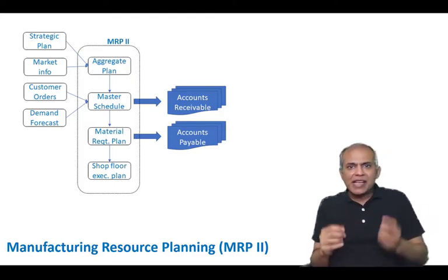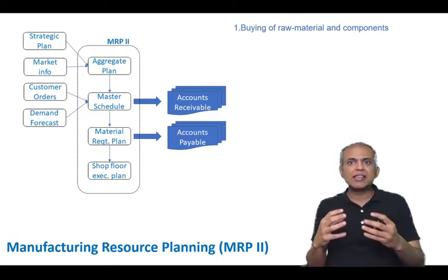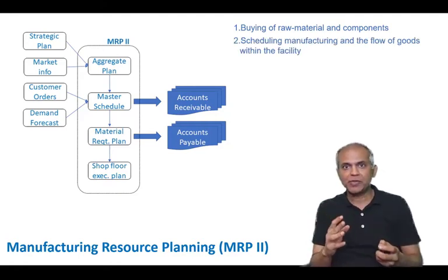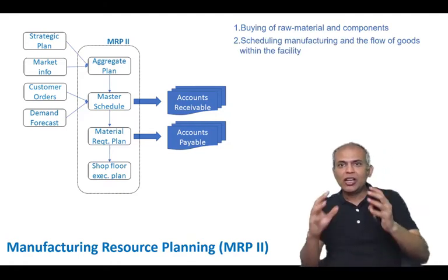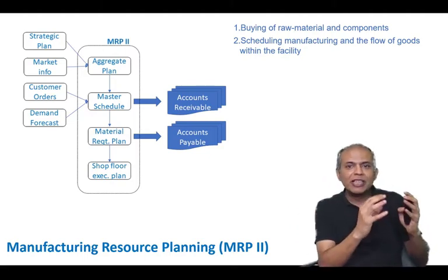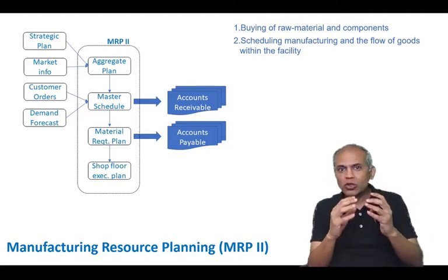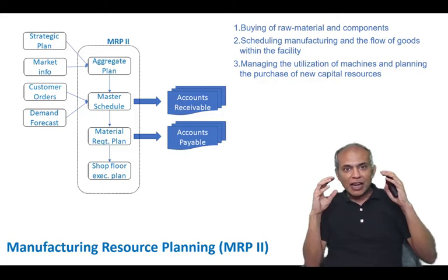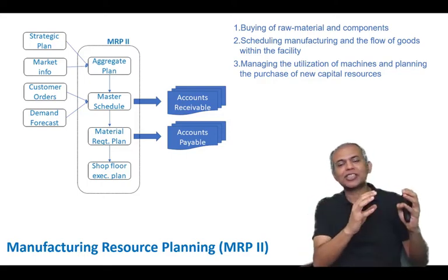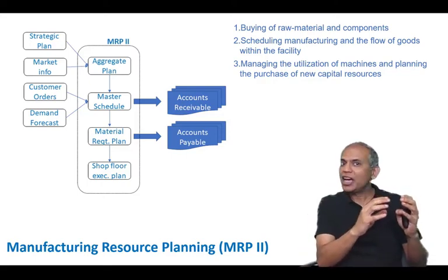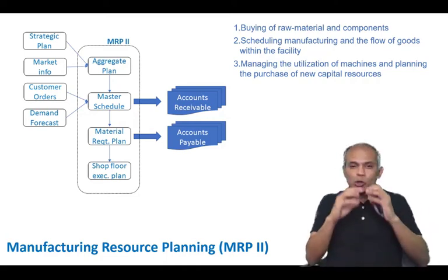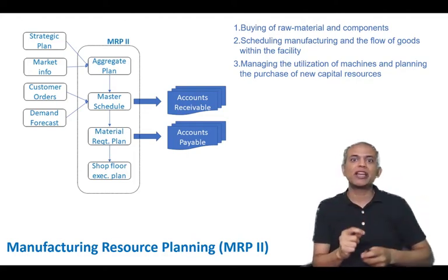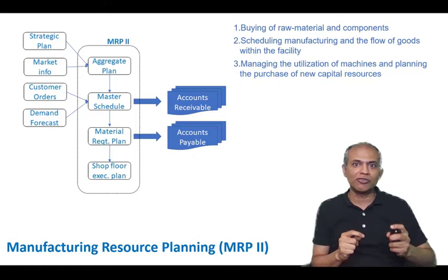At a very basic level, what MRP2 does is it allows us to buy the relevant raw material and components at the right time. It also allows us to ensure that the flow of goods within the facility is smooth and without too much inventory buildup or without taking too much time. It allows us to manage our resources so that the utilization of resources is controlled. As we discussed in a previous video, too much utilization is problematic and too little is also problematic, so MRP2 can help us plan the right amount of resource utilization.